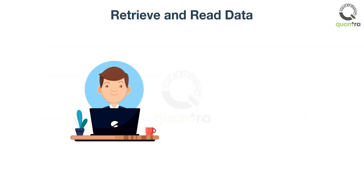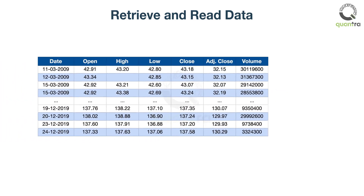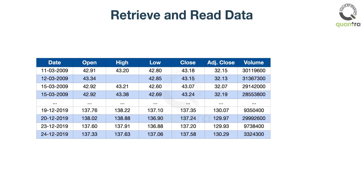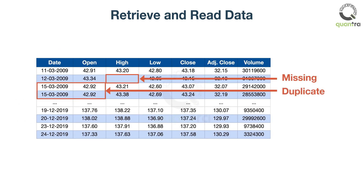Rob is looking forward to using a machine learning algorithm that can guide him when to go long on JP Morgan stock. He gets the price data from a data vendor, then makes sure the data quality is good by checking for missing and duplicate values. He performs other analysis to ensure that the data can be used with the ML algorithm.